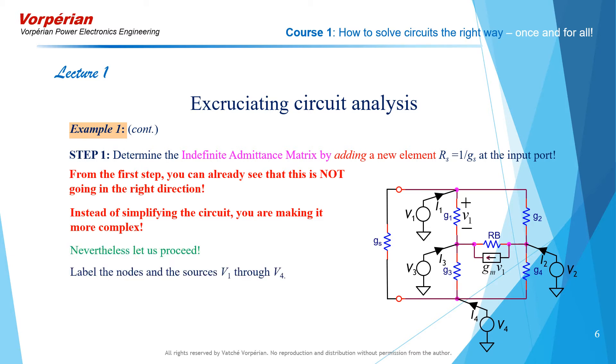Nevertheless, let us proceed. Label the nodes and the sources V1 through V4. And here they are: node 1, node 2, node 3, node 4, and the four sources V1, V2, V3, V4. Write the nodal equations and the indefinite admittance matrix follows.